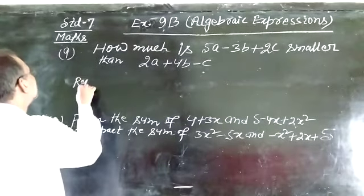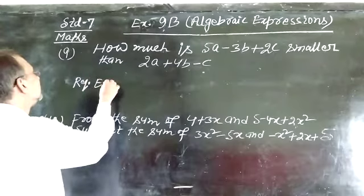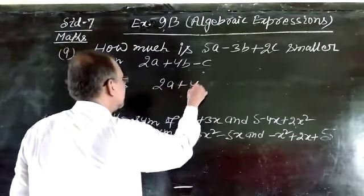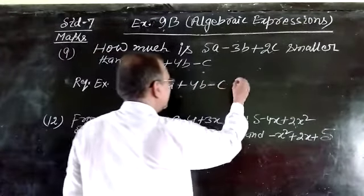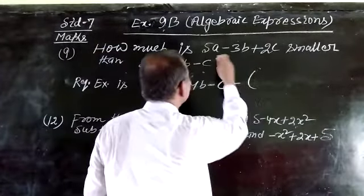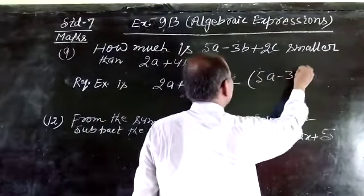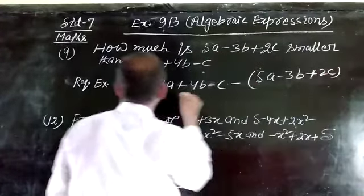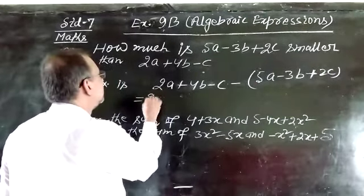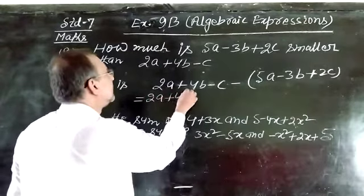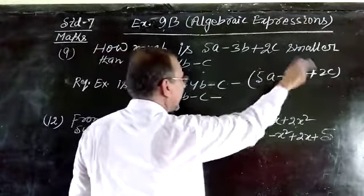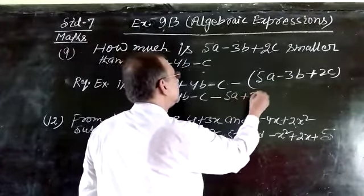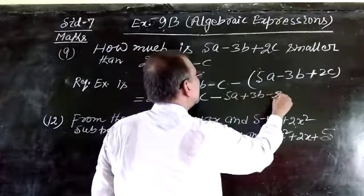The required expression is 2a plus 4b minus c small. a minus, inside the bracket, 5a minus 3b plus 2c small. This is equal to 2a plus 4b minus, bracket open, minus sign change.